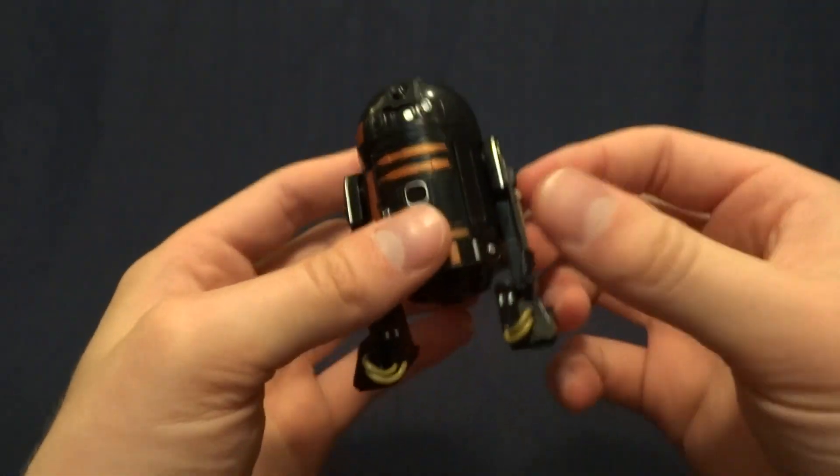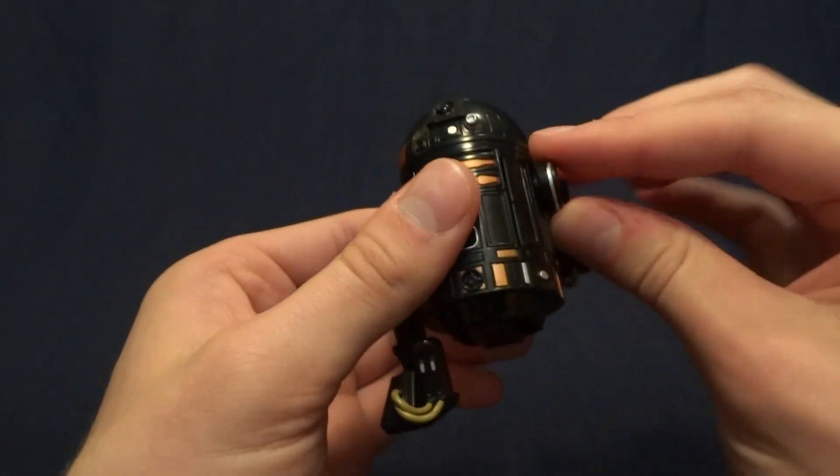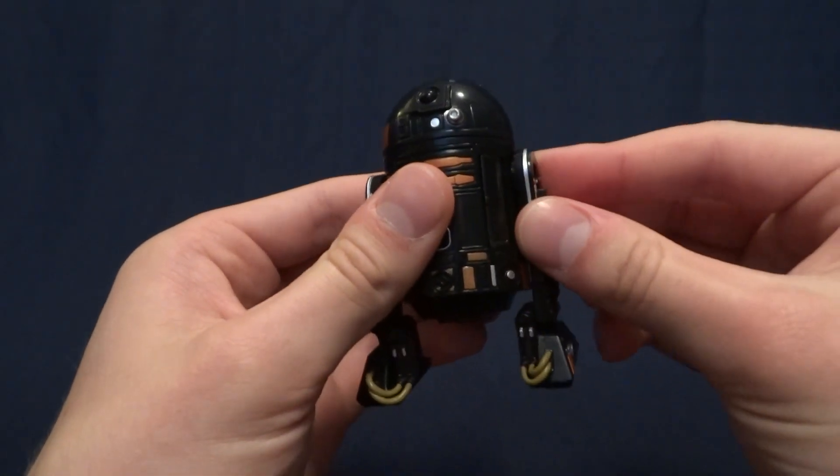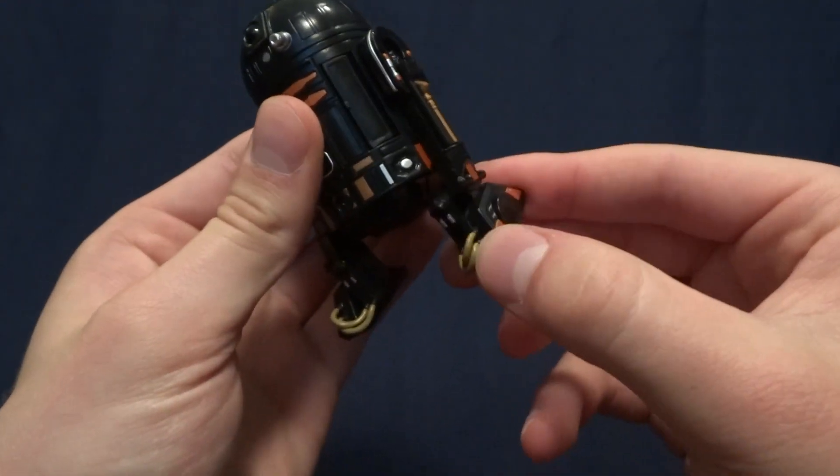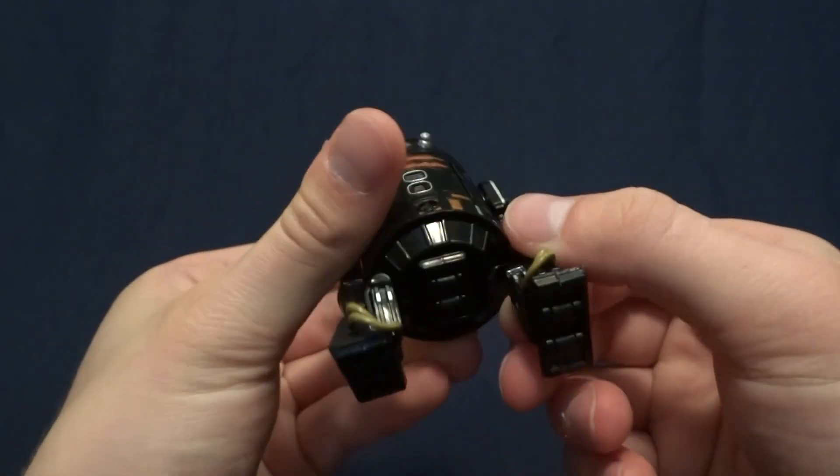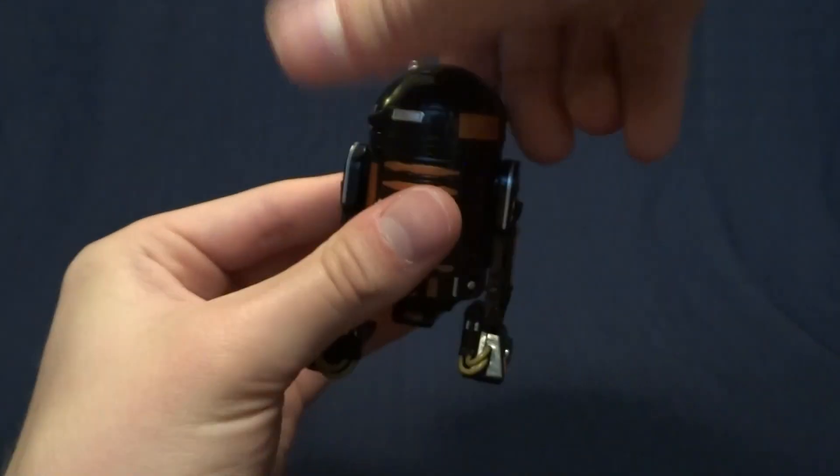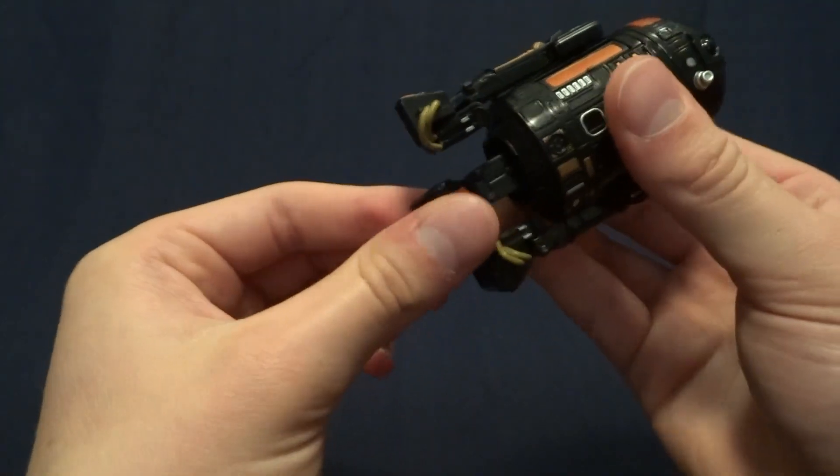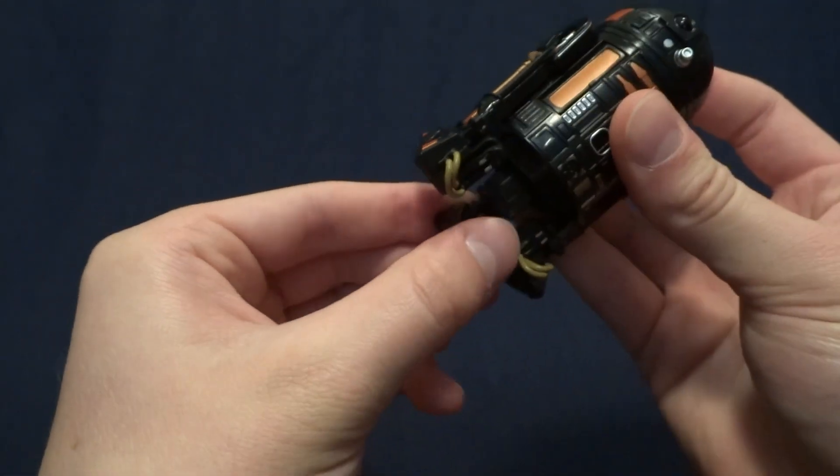As far as articulation on this figure goes, it's basically what you would expect for an astromech droid. The shoulder joint here swivels 360. There's a hinge here in its ankle. And then if you spin his head, his third leg pops down. And then there's a hinge on the little ankle on the third leg there.